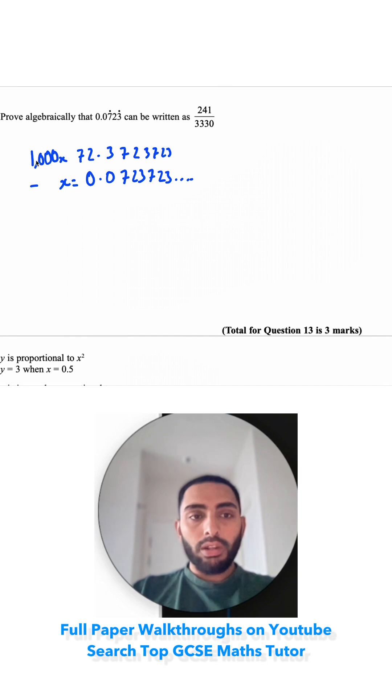So I'm going to take this bottom one away from this top one. Now 1000 take away x, which is 999x, is equal to... all of this is going to cancel out, and I've got 72.3 take away 0. So 72.3, and now I can solve this equation.